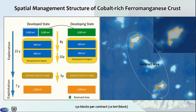Cobalt crust is similar to polymetallic sulfides in that it's broken into blocks. Because they occur on seamounts, the contract areas follow that environment. There are 150 blocks per contract for cobalt crust, and each block is 20 square kilometers. It has a similar temporal flow, with less overall area: 3,000 square kilometers are given as a reserved area for a developing state. Over 15 years of exploration, part of that is relinquished, and eventually 1,200 square kilometers will actually be mined for cobalt crust. Again, that timeline for exploitation is still being developed.